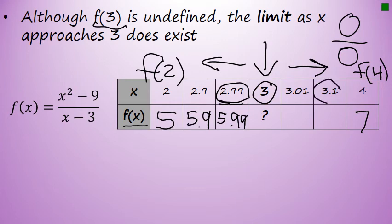Let's evaluate f(3.1). 3.1 squared minus 9 over 3.1 minus 3 is 6.1. And finally, f(3.01): 3.01 squared minus 9 over 3.01 minus 3 is 6.01. So at this point, I've evaluated three values a little bit smaller than 3 and a little bit bigger than 3.